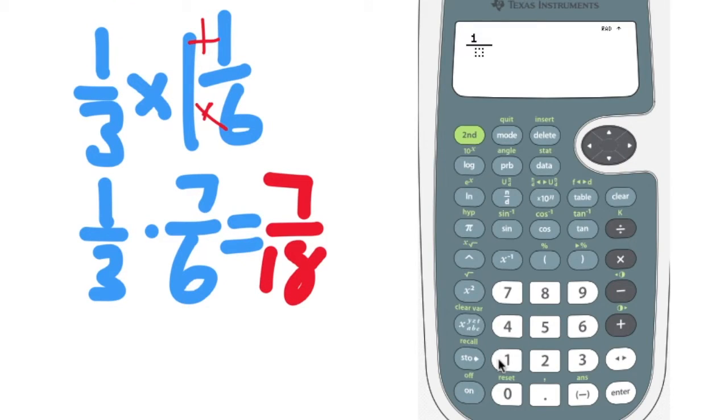Now you already know how to put a fraction in. So you press the fraction button. Put in 1 third times. Now a mixed number. You press the second button and press the fraction button again. And that'll allow you to put in a mixed number. You can see that we were correct.